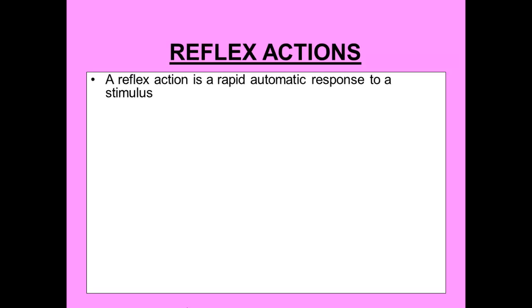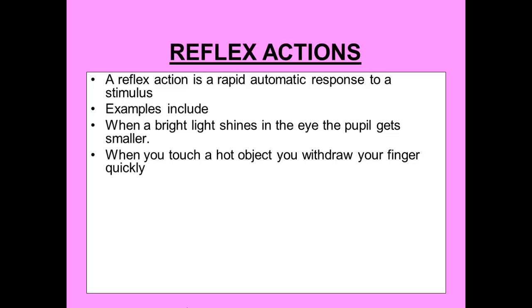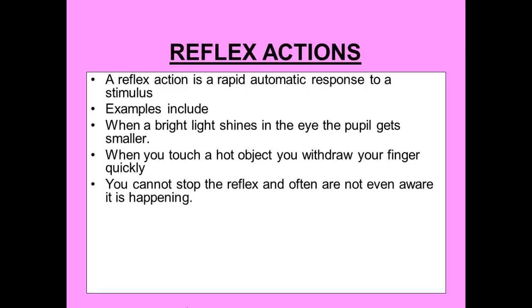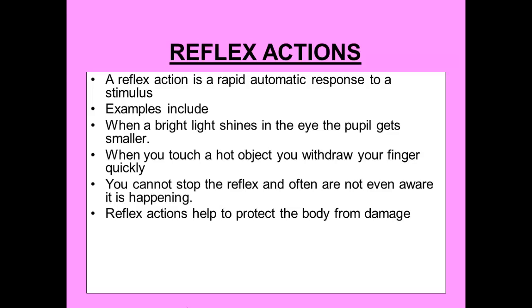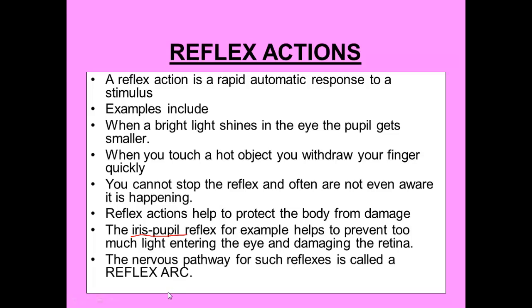A reflex action is a rapid and automatic response to a stimulus. Examples include your pupil becoming smaller when bright light shines in your eye, or withdrawing your finger when you touch a hot object. The key point is that you cannot stop a reflex occurring, and often you won't even know it is occurring. They are mainly there to protect the body from damage — the iris pupil reflex helps prevent too much light entering the eye and damaging the retina.